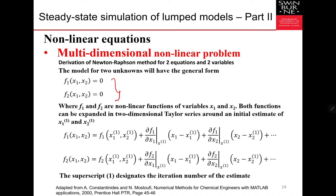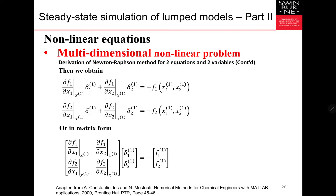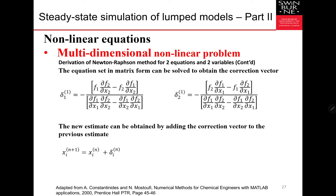With these two functions, we take the two-dimensional Taylor series expansion. When we set the left term to zero and truncate the second-order and higher derivatives of the Taylor series, we define the correction variables. We can then obtain this expression, or in matrix form, where this matrix is the Jacobian. The new estimate is obtained from the old estimate plus the correction factor.